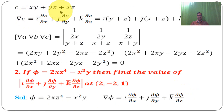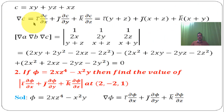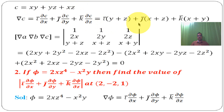Next, c = xy + yz + xz. Gradient of c = ī·(∂c/∂x) + j̄·(∂c/∂y) + k̄·(∂c/∂z). So ∂c/∂x = y + z, ∂c/∂y = x + z, ∂c/∂z = x + y. Therefore grad c = ī·(y+z) + j̄·(x+z) + k̄·(x+y).